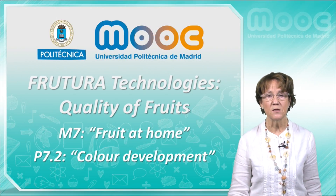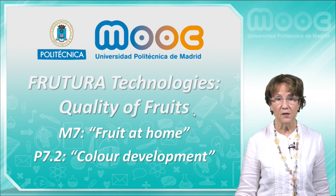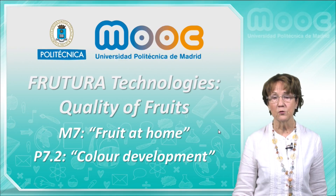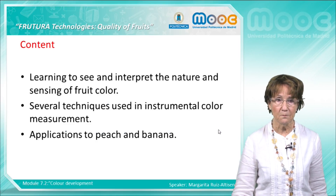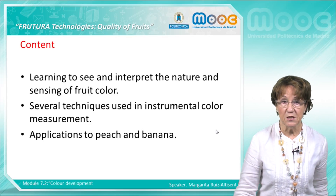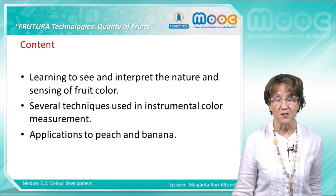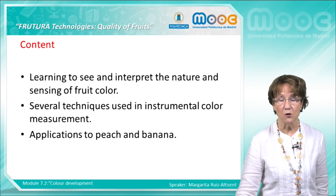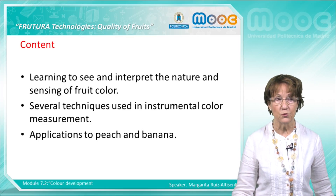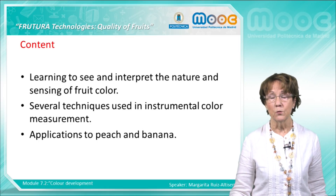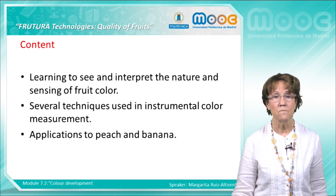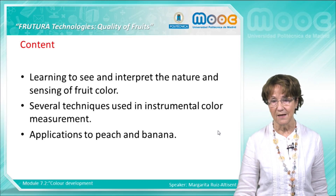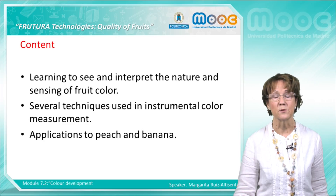Good day. I'm going to present the second part of module 7, Fruit at Home. The second part is devoted to studying color development. We will try to learn to see and interpret the nature and sensing of fruit color. We will look at several techniques used in instrumental color measurement and two applications to peach and to banana, which are very significant examples of food ripening.